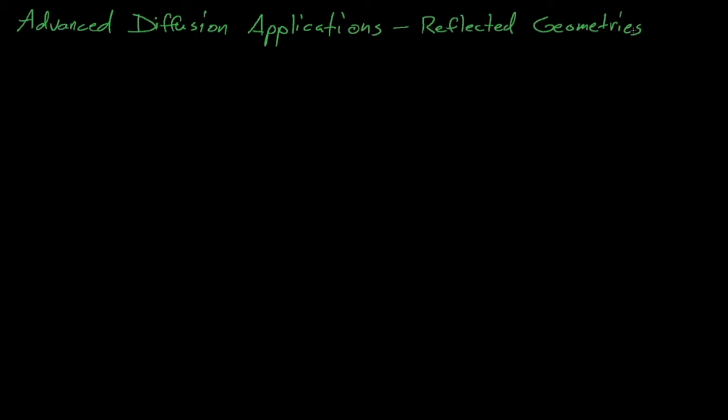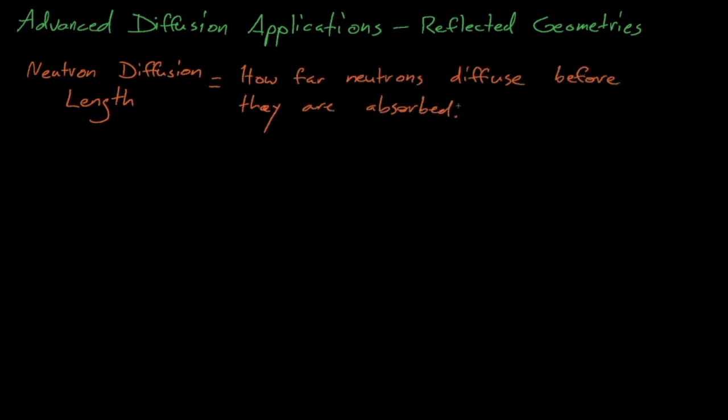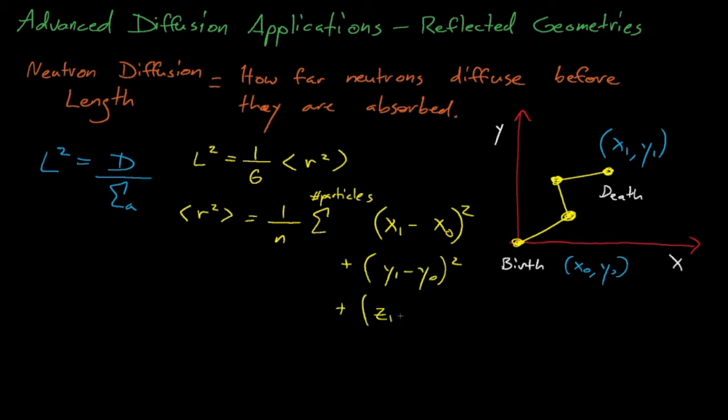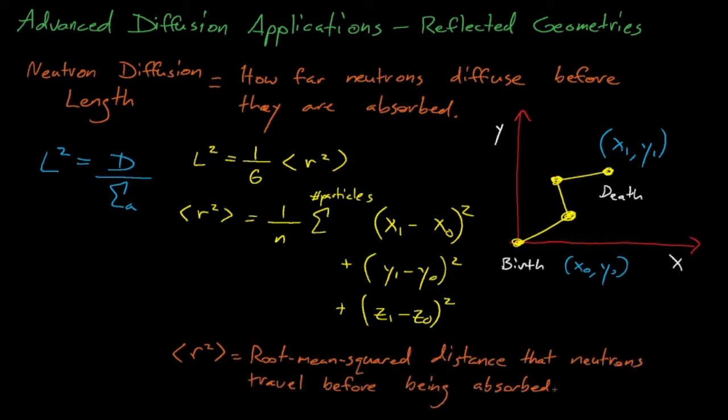But before we do this, we'll need to introduce the concept of the neutron diffusion length. The neutron diffusion length, L, is a measure of how far neutrons will diffuse in a system before they are absorbed. The diffusion length is defined as the ratio of the diffusion coefficient to the absorption cross-section in a system, and we can show that the diffusion length also equals one-sixth times the root mean square distance, or the as-the-crow-flies distance, that neutrons travel from birth until death.